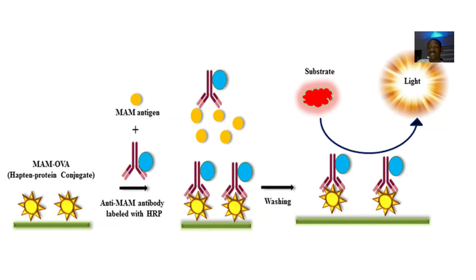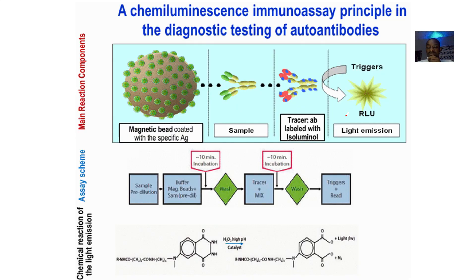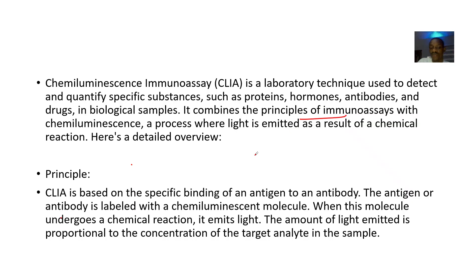systems or samples. It combines principles of immunoassay with chemiluminescence, which is a process where light is emitted as a result of a chemical reaction. For the principles, it is based on the specific binding of an antigen to an antibody. The antigen or antibody is labeled with a chemiluminescent molecule, and when this molecule undergoes a chemical reaction it emits light. The amount of light emitted is proportional to the concentration